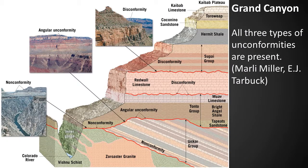This is a figure from our textbook showing that all three types of unconformities are found in the Grand Canyon — a disconformity, an angular unconformity, and a nonconformity. Try to do a little internet research on this topic by searching for images of types of unconformities.